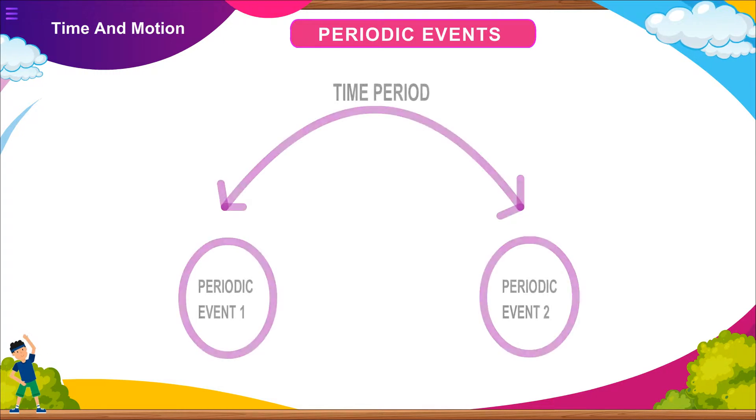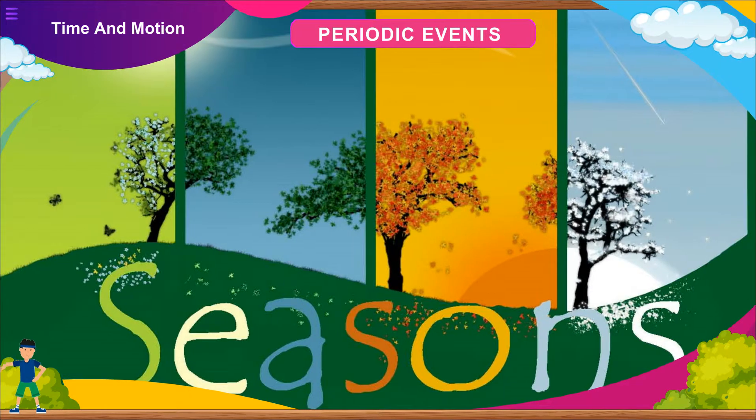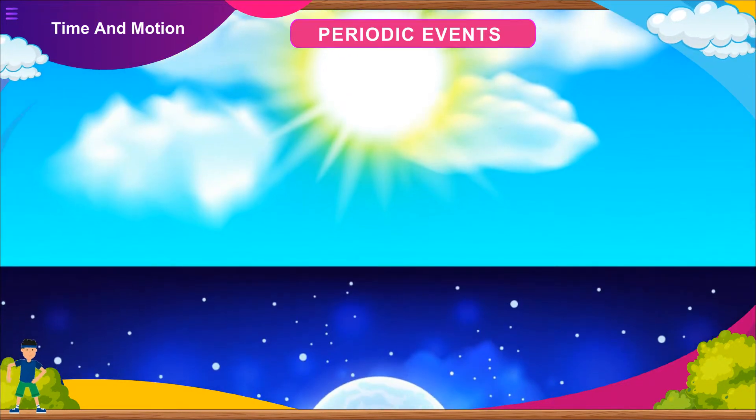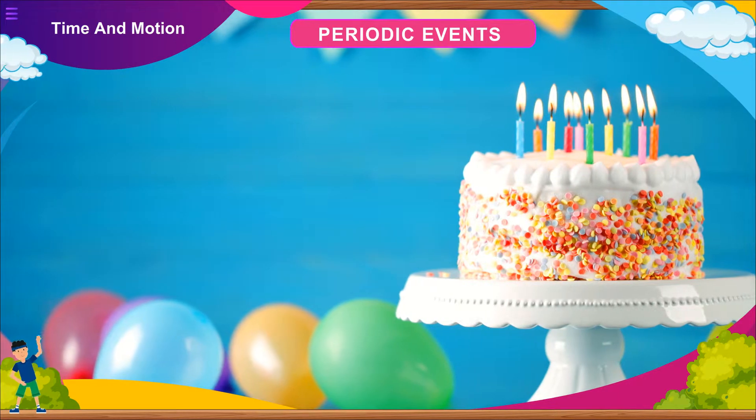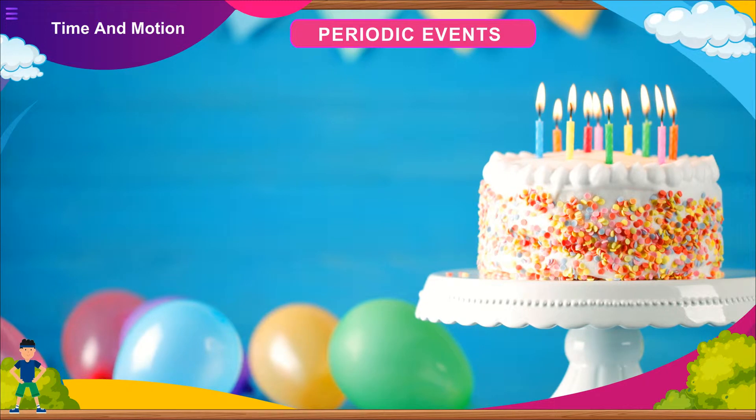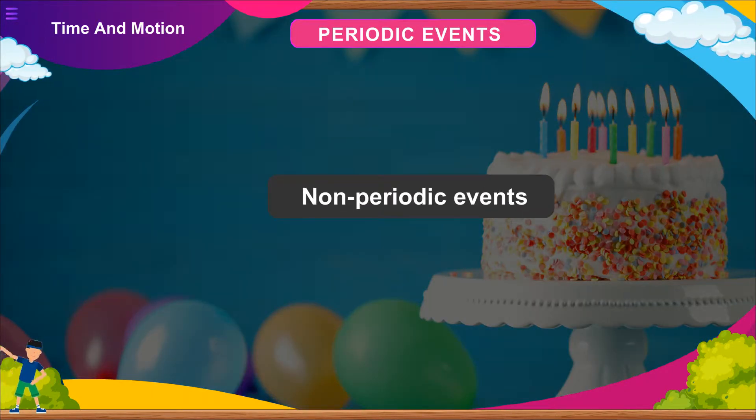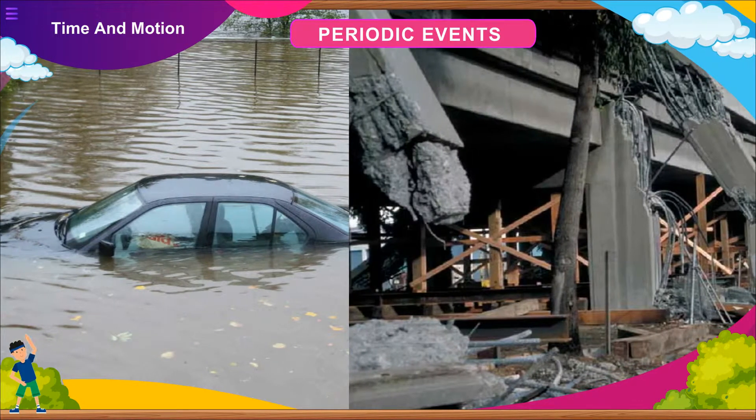Periodic Events: There are many events that are repeated after a regular interval of time. We call such events as periodic events and the intervals as periods. Coming of seasons, occurrence of day and night, and your birthday every year are examples of periodic events. Events that are not periodic are said to be non-periodic events, like floods and earthquakes.